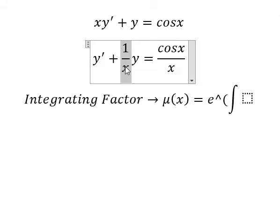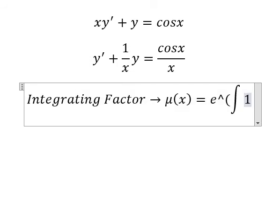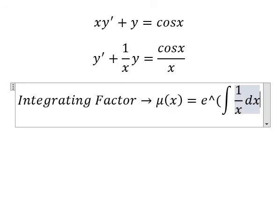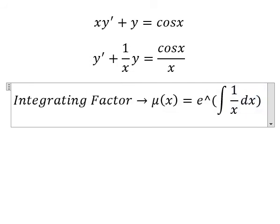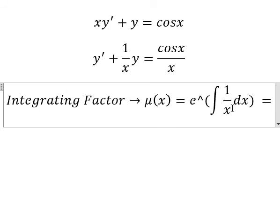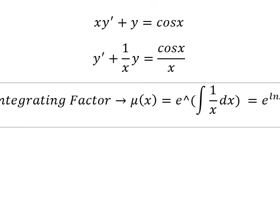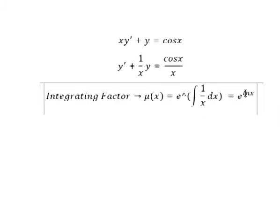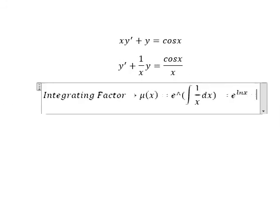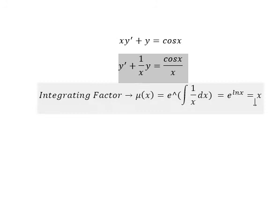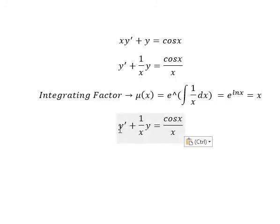We see that 1 over x is next to y. So we put 1 over x in here and we have dx. The integral of 1 over x gives us e to the power of ln x. And this equals x. That means we multiply both sides by x.